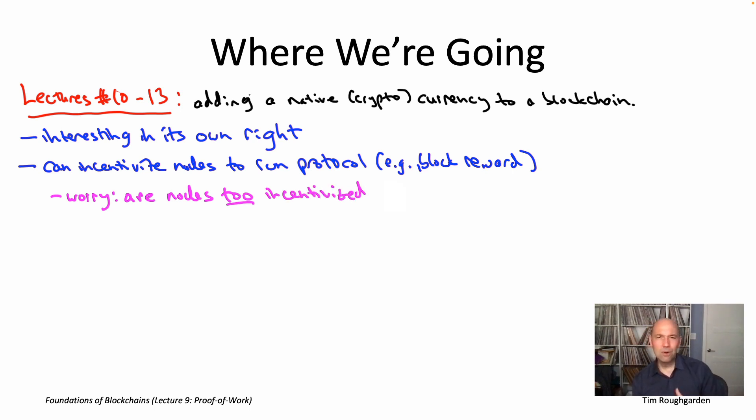Because the worry is that nodes, even if they're not Byzantine, even if they have no interest in bringing down your protocol, it's pretty reasonable to assume they'd be profit maximizing. And so we kind of want a sanity check that we've introduced incentives in a way that motivates nodes to run the protocol as we intended, to run the protocol as if they were honest nodes.